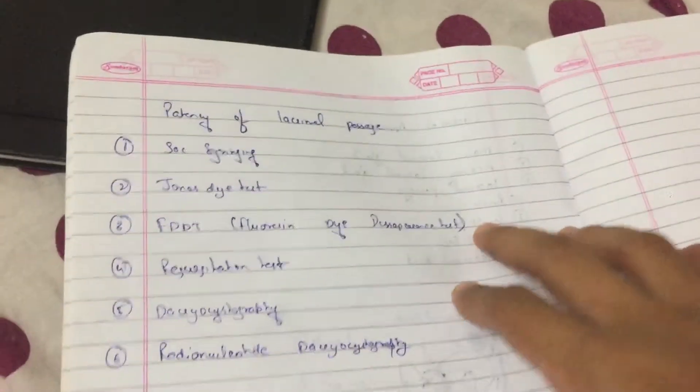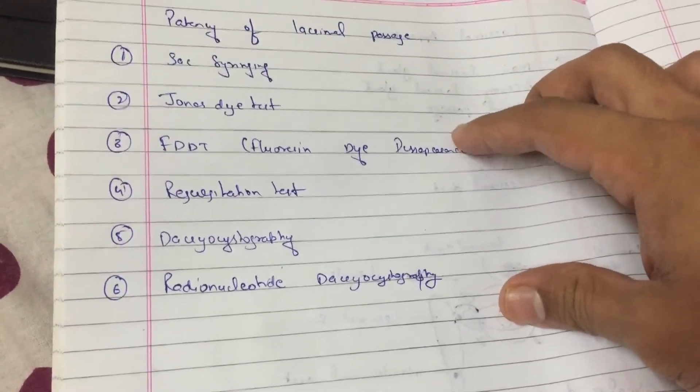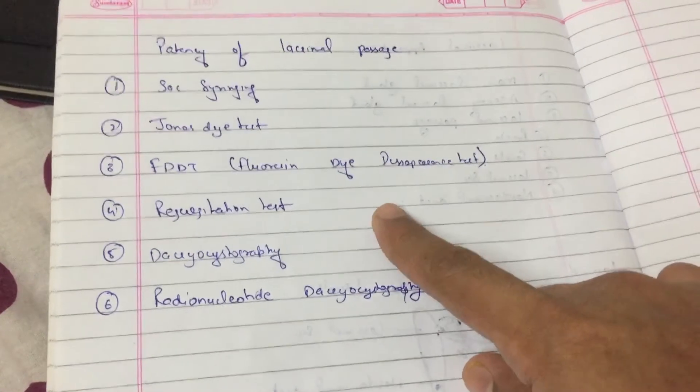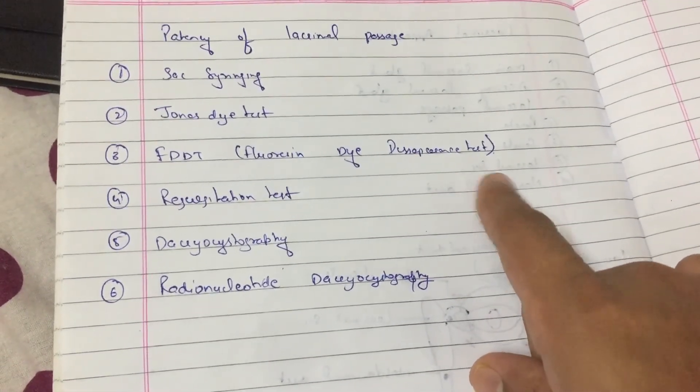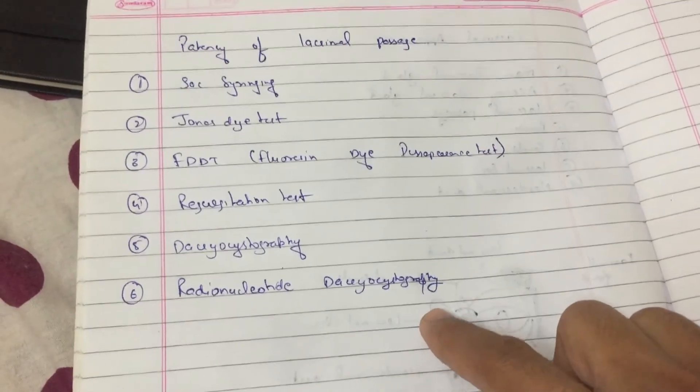For that, we have many tests. Let's just name out the tests. Sac syringing, Jones dye test, FDDT that is fluorescein dye disappearance test, regurgitation test, dacryocystography and radionuclear dacryocystography.